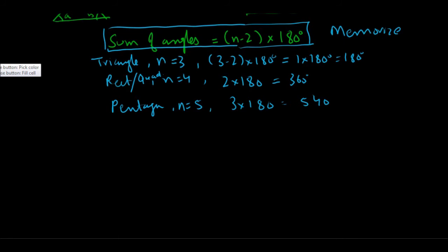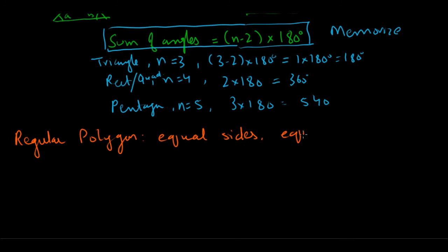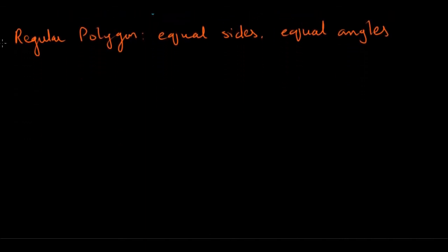Next, we'll talk about regular polygons. A regular polygon has equal sides and equal angles. Many times on the GRE, you will see this word 'regular' showing up. Let's look at an example.